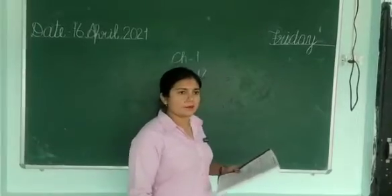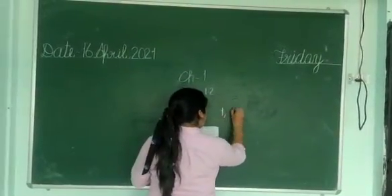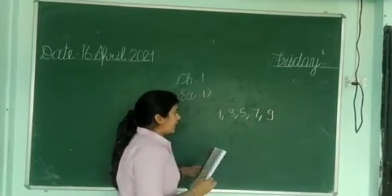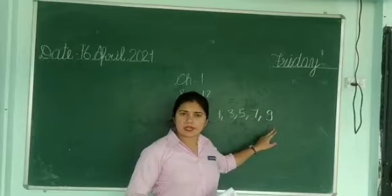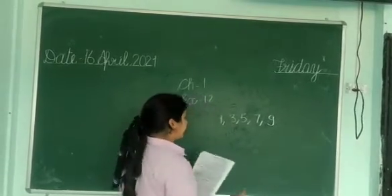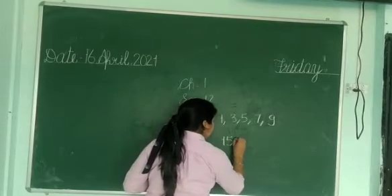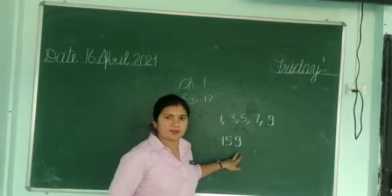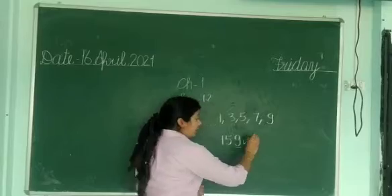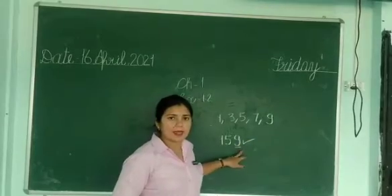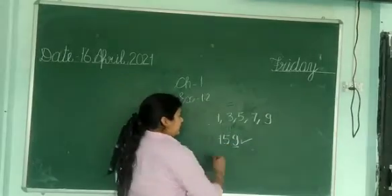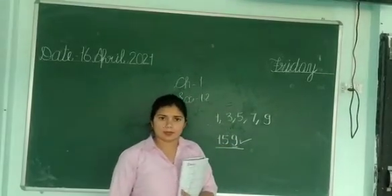Odd numbers — which numbers are odd numbers? 1, 3, 5, 7, 9. If any of these digits appear at the ones place, those are our odd numbers. For example, 159. In 159, what is at the ones place? 9. And 9 is an odd number, so this number is an odd number.